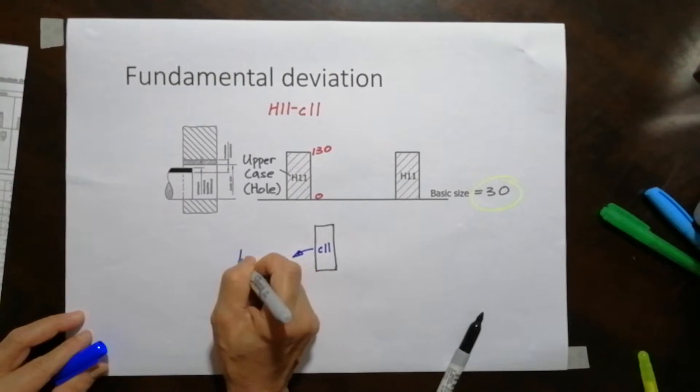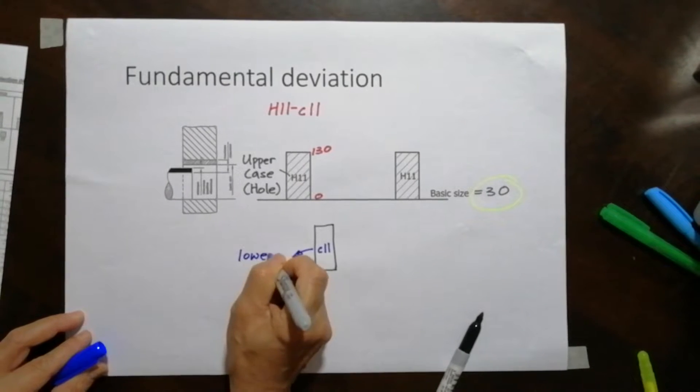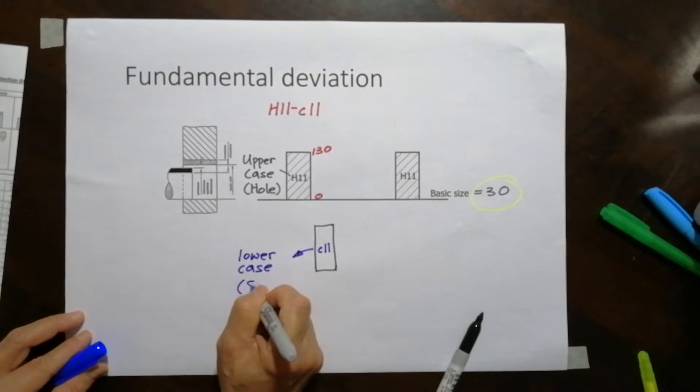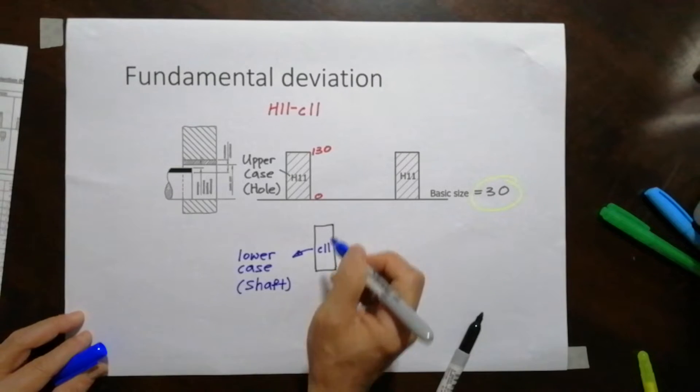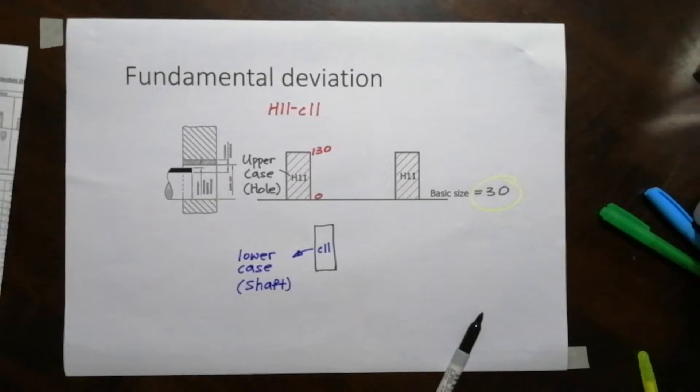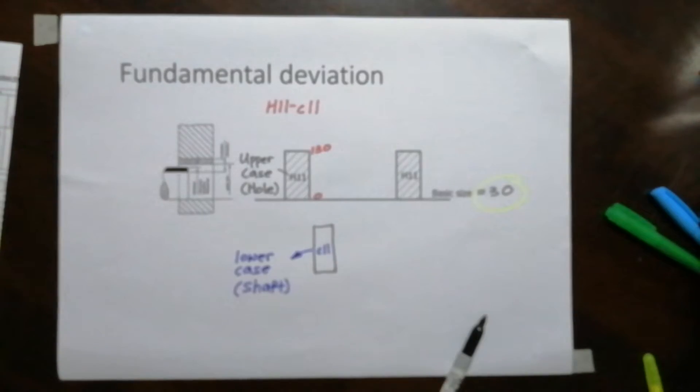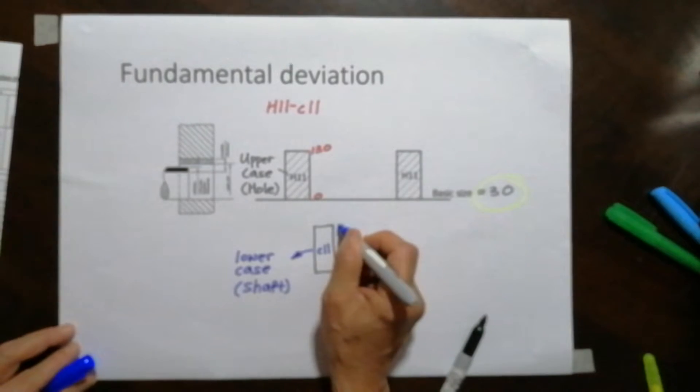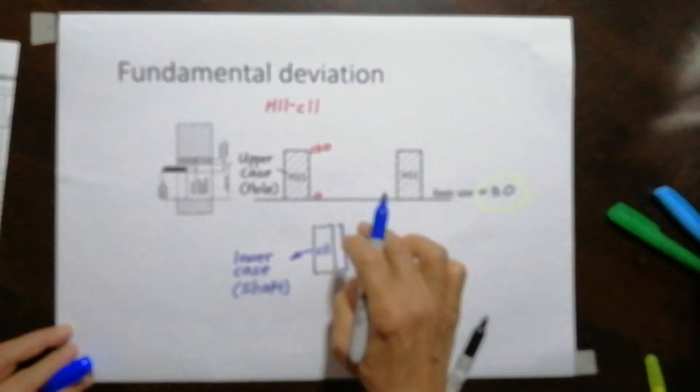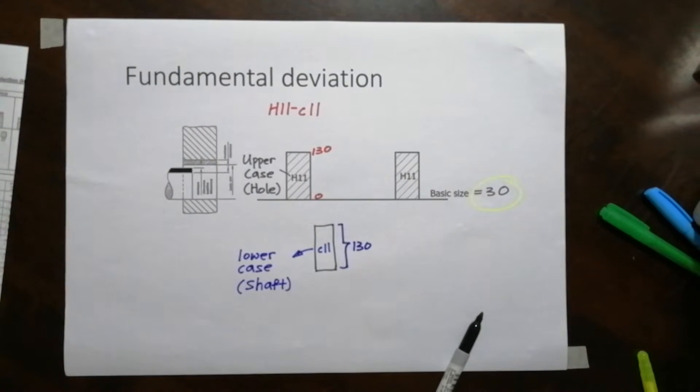C11 means the size, so basically same number, same size. So the height of this guy, if you measure it below, it will be 130. Same size. Now where does it start? So let's see where it start. Go back to the table now.